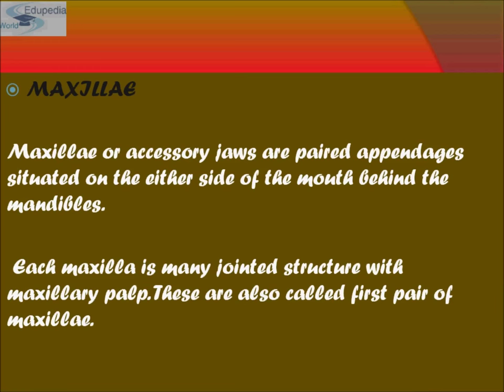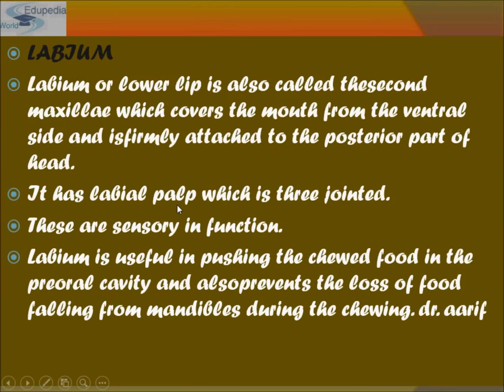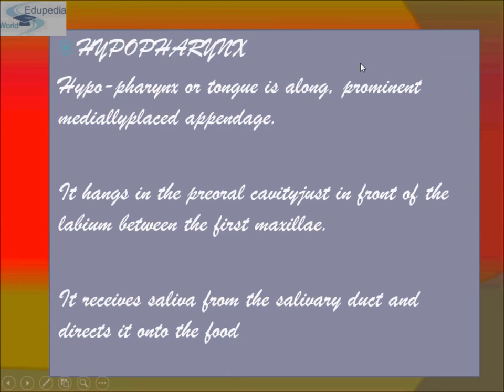Labrum is the upper lip; labium is the lower lip, also called the second maxilla. It covers the mouth from the ventral side and is firmly attached to the posterior part of the head. It has three-jointed labial palps with sensory receptors. Labium is useful in pushing chewed food into the pre-oral cavity, preventing food from falling from the mandible during chewing.